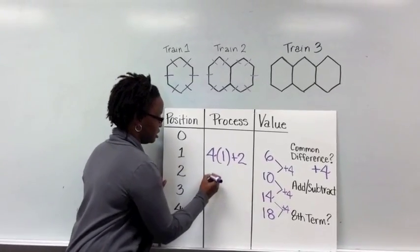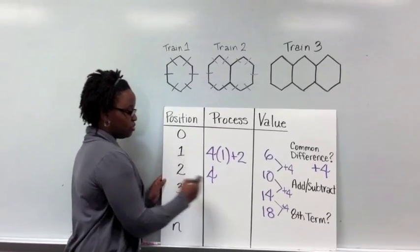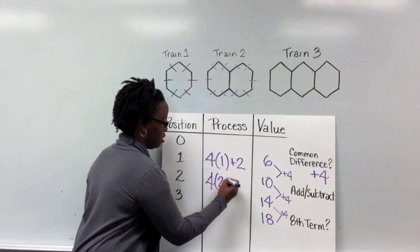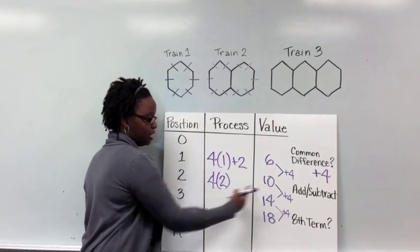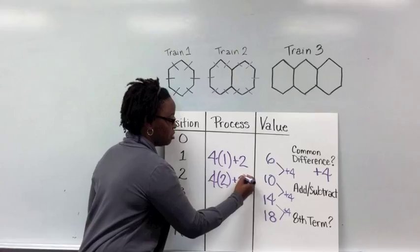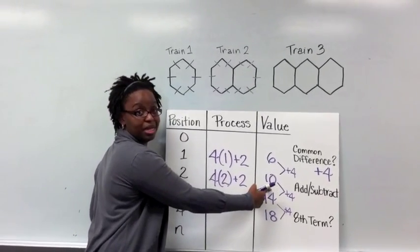So my common difference is still 4. I'm going to multiply that by the position of 2. 4 times 2 is 8. I still need more because I've got to get to 10 here. So if I add that 2, now my 4 times 2 is 8, plus 2 gives me my 10.